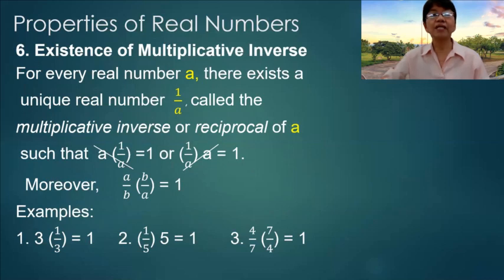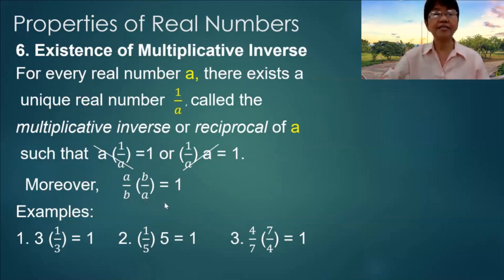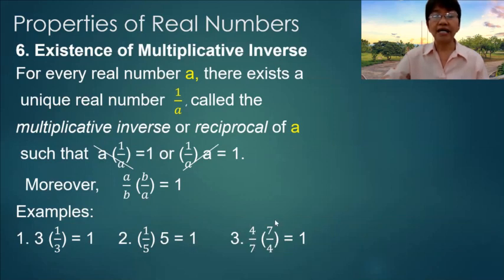Number six: Existence of the Multiplicative Inverse. For every real number a, there exists a unique real number 1 over a, called the multiplicative inverse or reciprocal of a, such that a times 1/a is equal to 1, or 1/a times a is equal to 1. Moreover, a/b times b/a is equal to 1. For example: 3 times 1/3 equals 1; cancelling the five gives 1; and in number three, cancelling fours and sevens also gives 1.